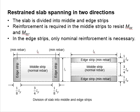According to BS, the slab is divided into the middle and the edge strips. The middle strip consists of about three-quarters of the span and one-eighth of the span is considered as the edge strips.